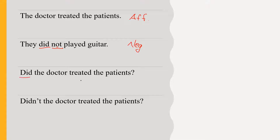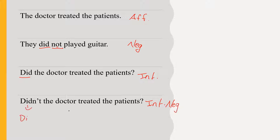'Did the doctor treat the patients?' This is an interrogative sentence. 'Didn't the doctor treat the patients?' This is an interrogative negative sentence. Here 'didn't' is the short form of 'did not'.